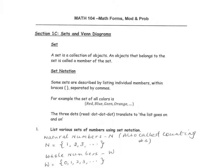A set is a collection of objects. When we look at the first example in the notes, this is a set of all colors. We have the braces that tell us this is a collection of objects, and the objects are listed inside — here they are colors: red, blue, green, orange — separated by commas. The dots at the end tell us that the list goes on and on. This is how a set is denoted in mathematics.